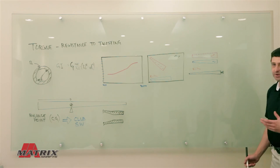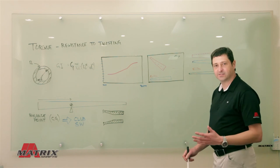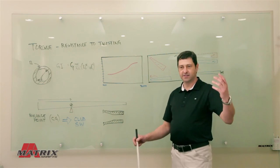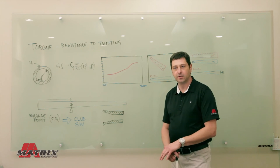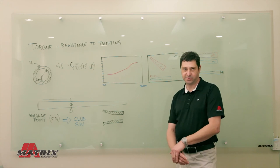The last thing we're going to talk about is overall weight. People have asked what's the difference between a 60 and a 70 gram shaft. Well, other than weight there doesn't have to be any difference in the shaft.